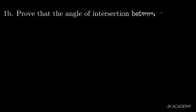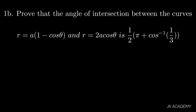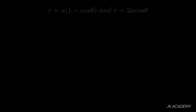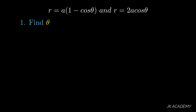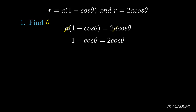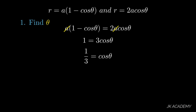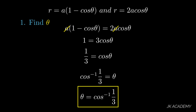Let's solve the question: prove that the angle of intersection between r = a(1 − cosθ) and r = 2a cosθ is (1/2)(π + cos⁻¹(1/3)). Step one — find theta. Comparing the RHS of both equations: a(1 − cosθ) = 2a cosθ. Dividing by a: 1 − cosθ = 2 cosθ, so 1 = 3 cosθ, giving cosθ = 1/3. Therefore theta = cos⁻¹(1/3).